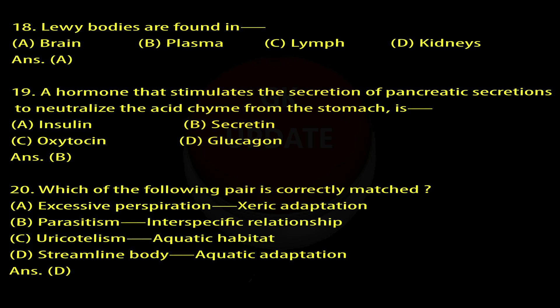Question 19: A hormone that stimulates the secretion of pancreatic secretions to neutralize the acid chyme from the stomach is. A. Insulin, B. Secretin, C. Oxytocin, D. Glucagon. Answer: B.